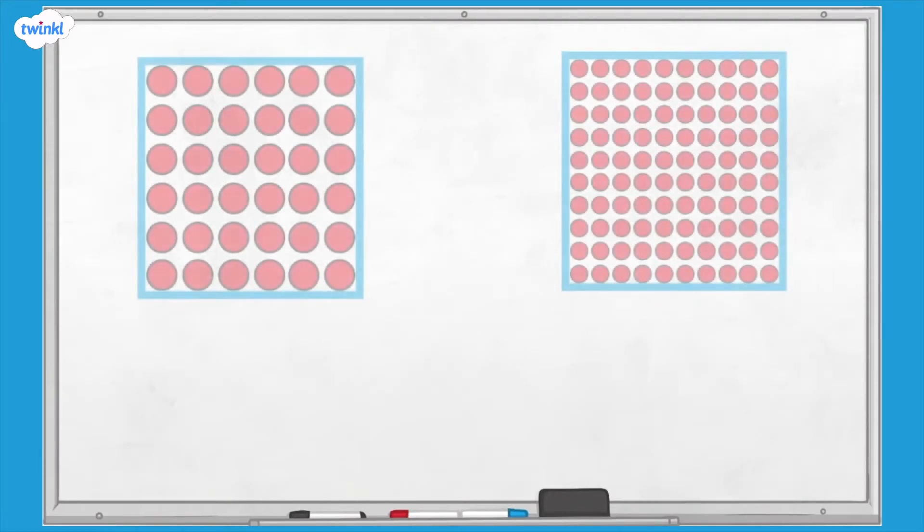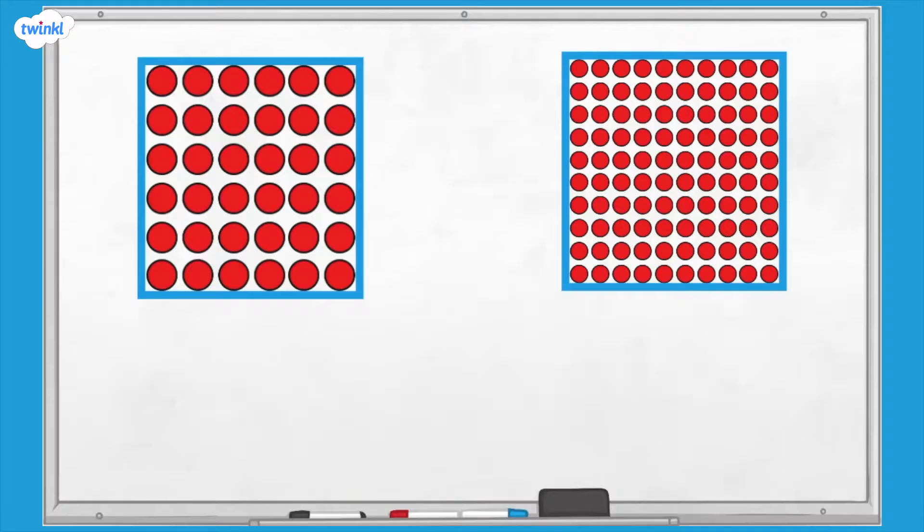How would we write a similar statement for these arrays? Pause here and have a go.